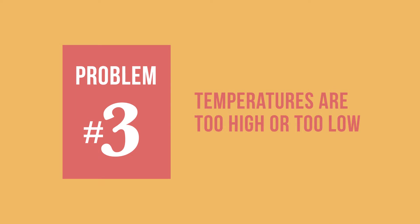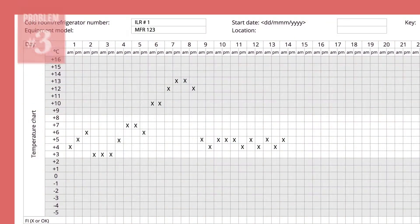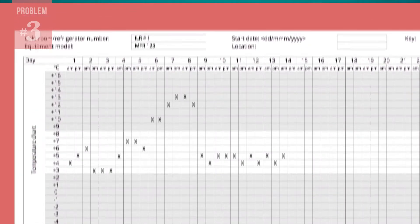Now here is another type of problem: temperatures are too high or too low, or alarms have been triggered. On this temperature monitoring chart, which has been filled out well, we can see that over the past month, six alarms have been triggered because temperatures were too high, above 8 degrees Celsius. When you see evidence like this, it may be a sign that the cold chain equipment needs repair or maintenance.